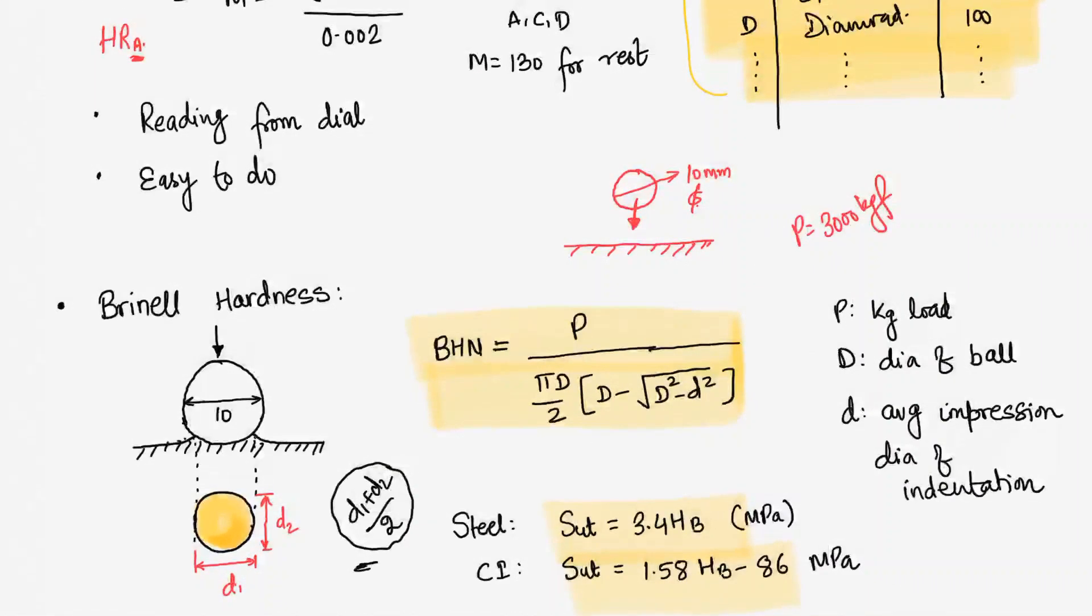So why do we want to do the hardness test? Because hardness test is a non-destructive test. We are not destructing the material, there will be a small indentation on it. Since it is a non-destructive test, without destructing the material I am calculating its ultimate strength value. That is useful for me.